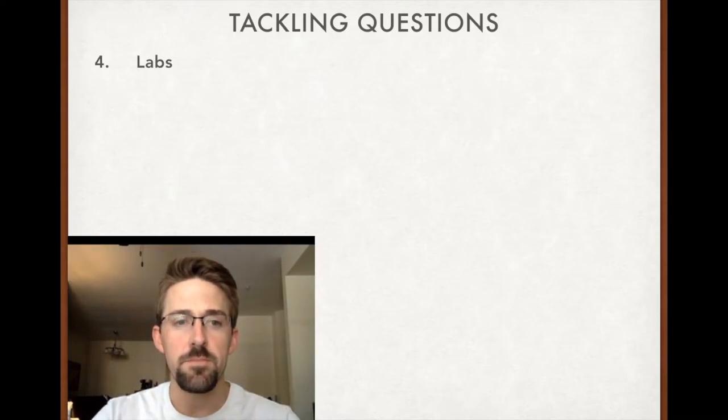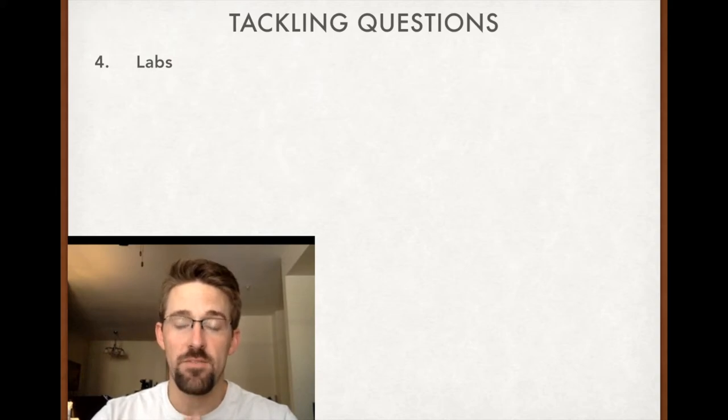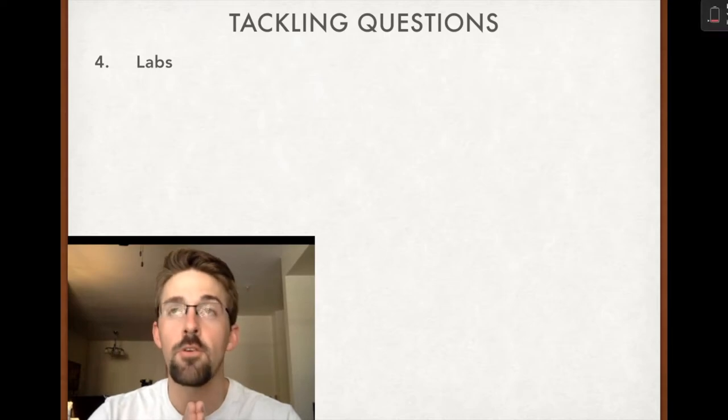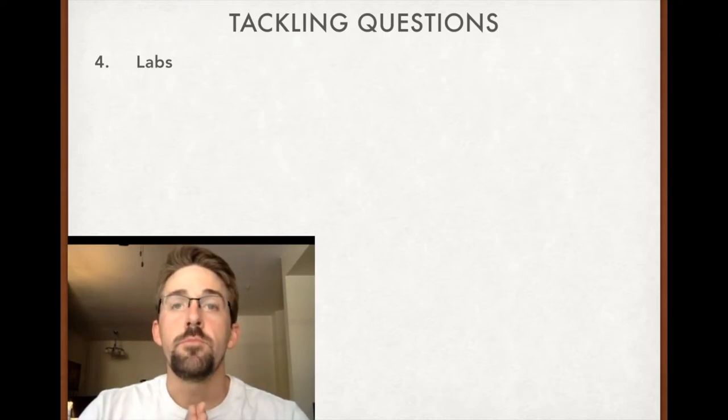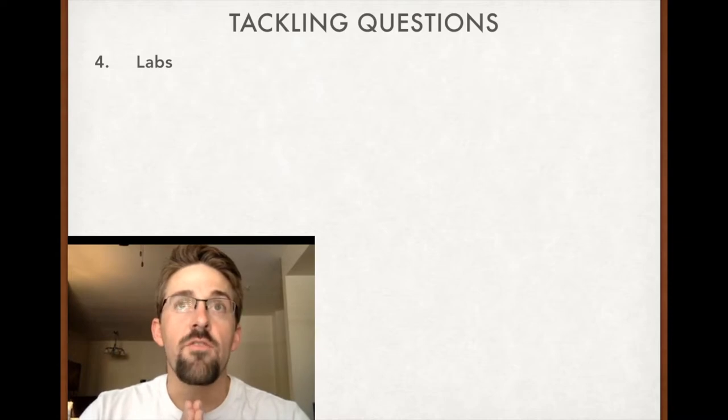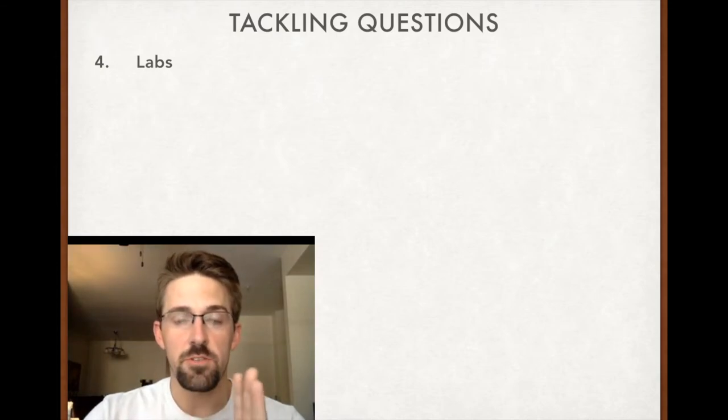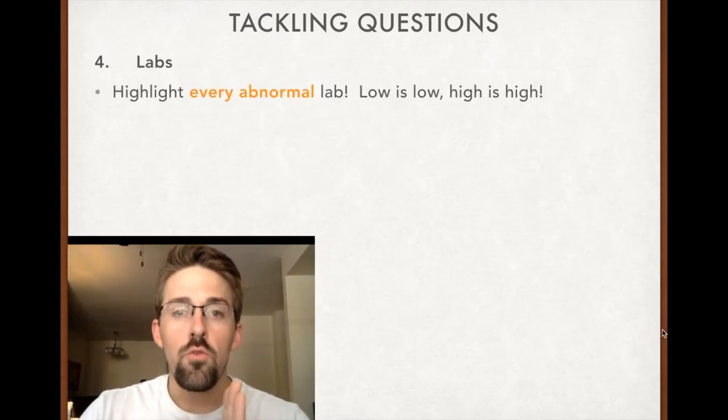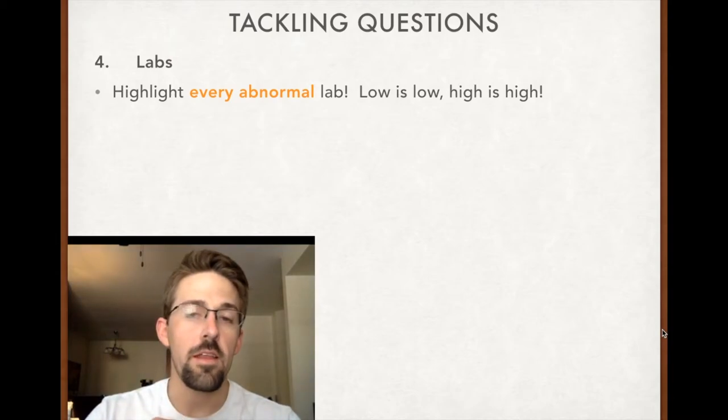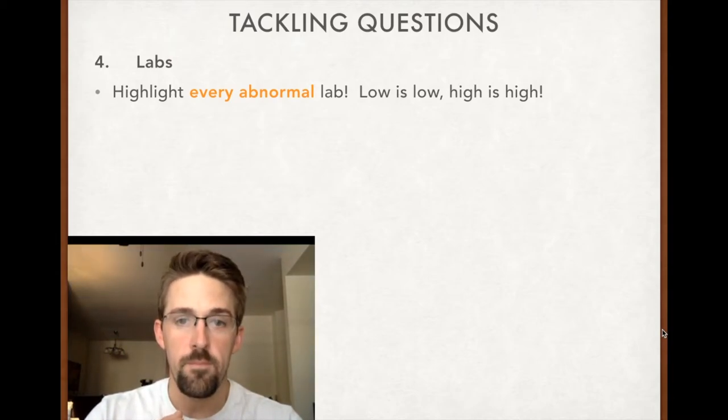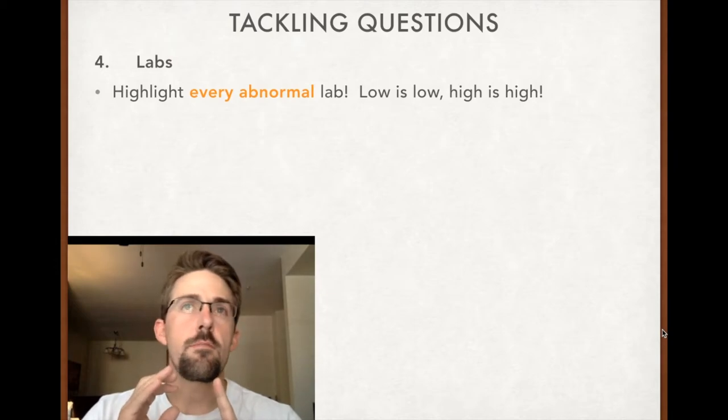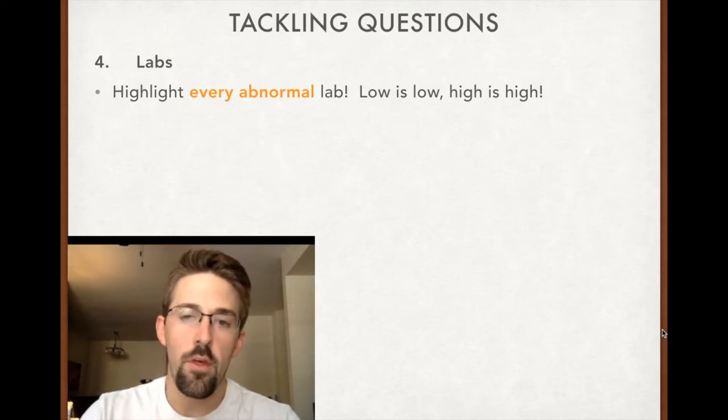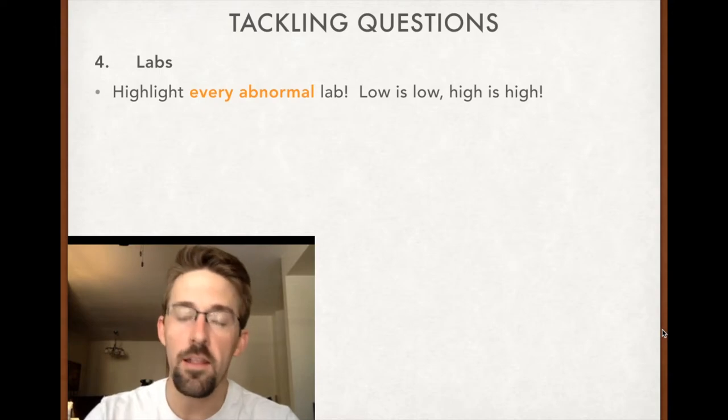Next, we look at labs. Labs are key. Labs can be your best friend. You have to go through labs every single time. You'll get faster at it. You'll get better. It becomes easier. Labs are objective. They might be the most objective thing on the test. You can't argue against labs and vital signs, but labs especially. You and your new mouse are going to highlight every single abnormal lab. Low is low. High is high. If the potassium is a tenth of a point too low, you highlight it.